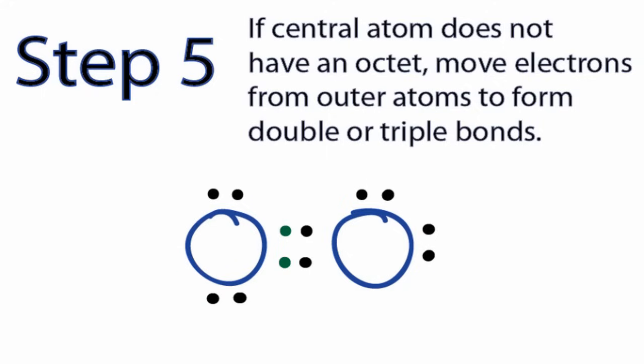If I wanted, I could replace these right here with two lines to show the double bond, where each line represents a pair of electrons. For Lewis structures like N2, I would even use a triple bond to achieve octets.